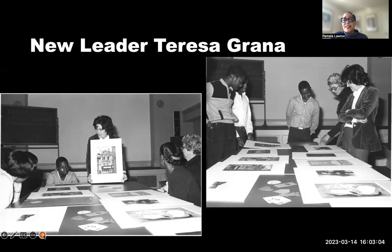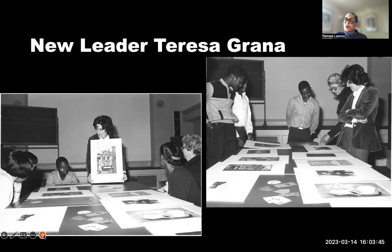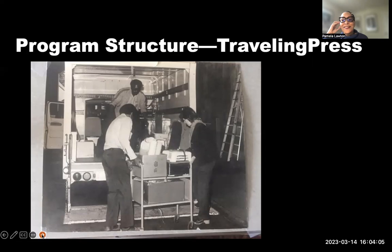Discover Graphics took place in six four-week cycles each school year. All D.C. area secondary schools were eligible to apply, including private schools, and between 12 and 15 students per chosen school participated. Students spent one full school day each week of the cycle in the museum studio. The second component provided a traveling Brand intaglio press delivered to four schools per cycle for a one-month loan during the program cycle.